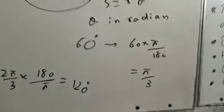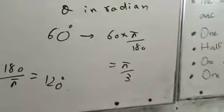Now, if you want to convert degrees to radians, like 60 degrees, then multiply by π/180.